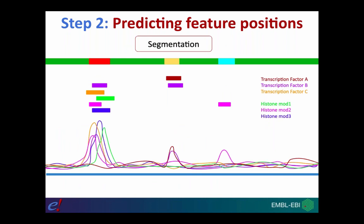The next step is a process called segmentation, where we categorize different regulatory features based on their underlying signature. For example, category A might be a promoter characterized by one signature, category B might be an enhancer characterized by a different signature, and another category might be a CTCF binding feature associated with a particular evidence type.